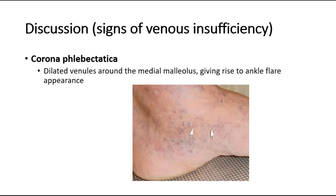Corona flebectatica are dilated veins around the medial malleolus — around the inner ankle area — giving rise to an ankle flare appearance, as shown in this picture.